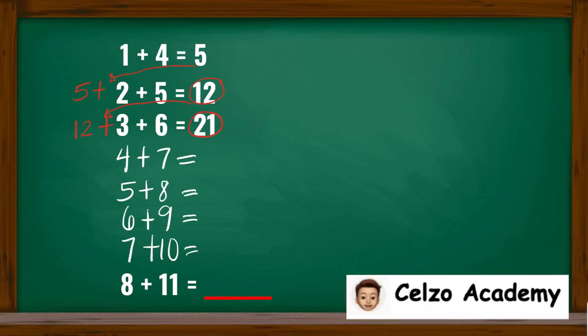Continuing with the pattern, this means that 4 plus 7 is 11, and then we need to add the previous answer, 21. So the answer is 32. For 5 plus 8, we need to add the previous answer, 32. And 32 plus 5 is 37, 37 plus 8 is 45.